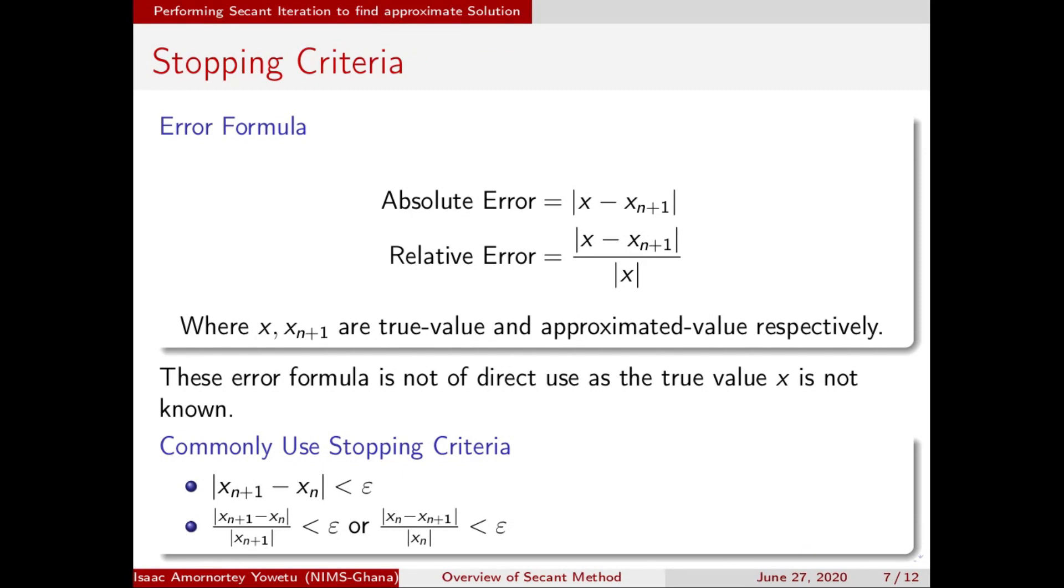When writing a computer program to solve a problem using the Secant method, we also have the error formula, which is not commonly used because we don't know the true value. So we mostly use the commonly used stopping criteria, which is x(n+1) minus x(n) should be less than epsilon or tolerance. Some people also choose to form a table in their iterative process.